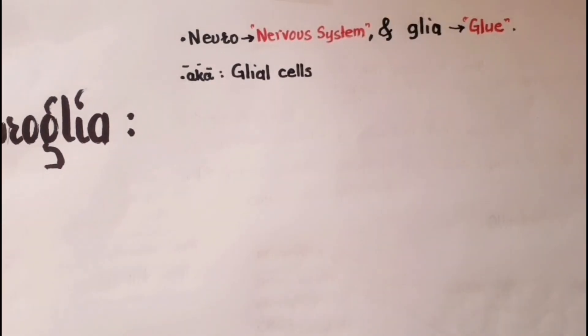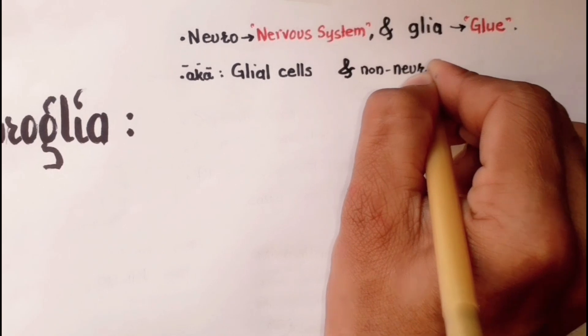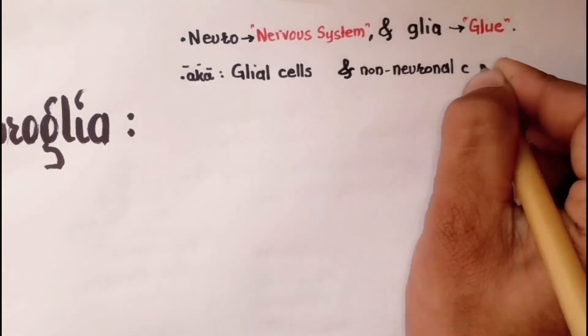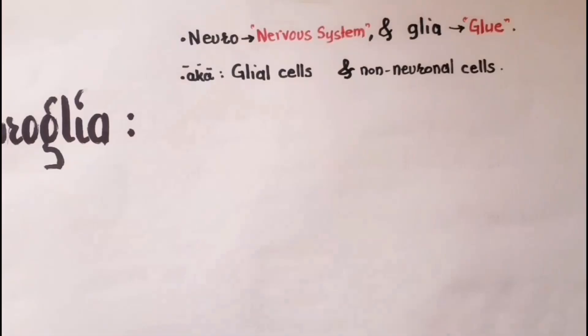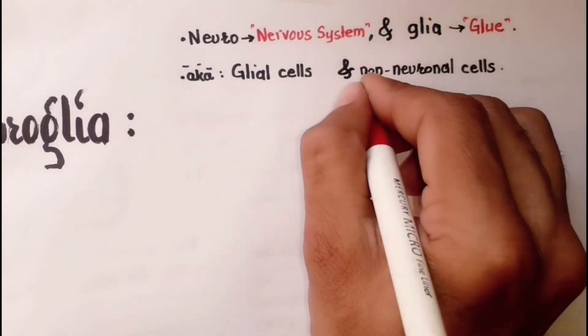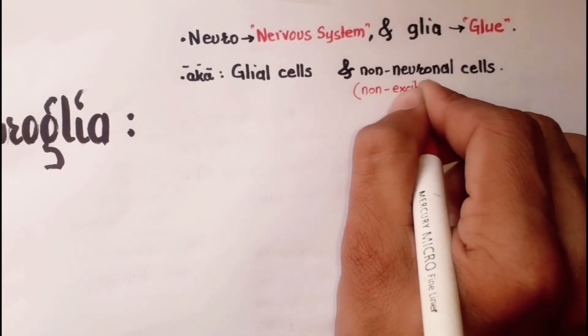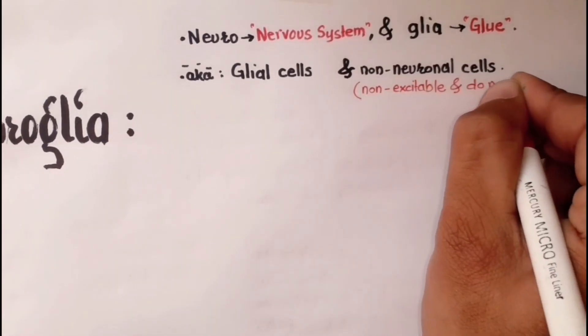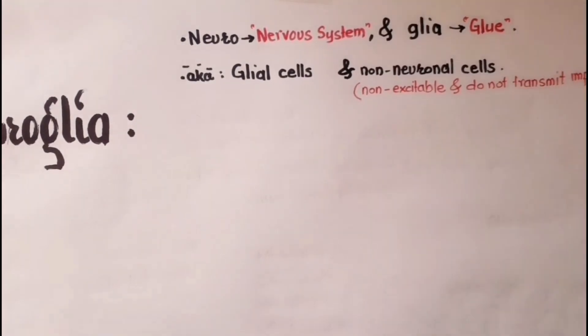Neuroglial cells are sometimes called non-neuronal cells because these cells are non-excitable and do not transmit nerve impulses like neurons.